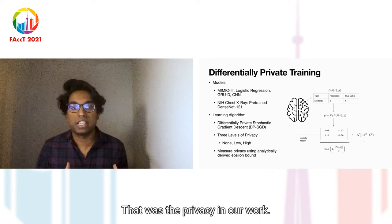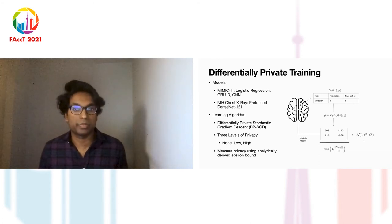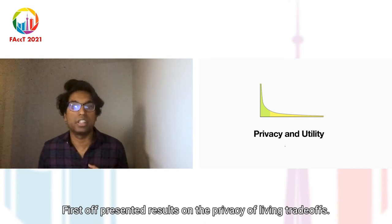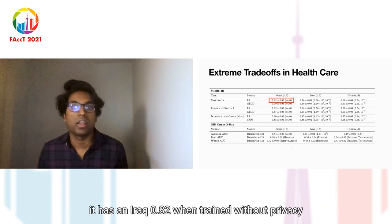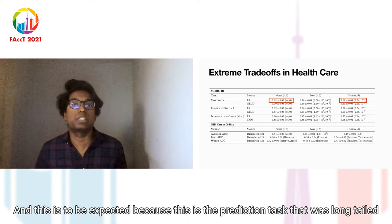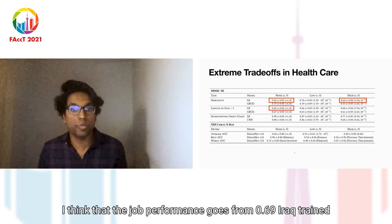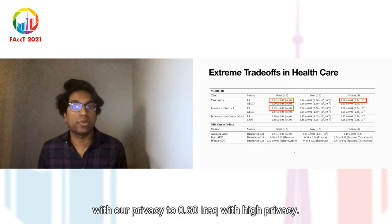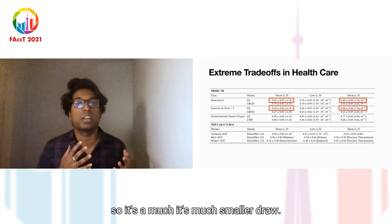We consider three levels of privacy: none, low, and high, all defined by the analytically derived epsilon value. For the logistic regression model on mortality, it achieves an AUROC of 0.82 when trained without privacy, and experiences a 22% drop in performance when trained with a high level of differential privacy — expected because this is the long-tailed prediction task. For length of stay greater than three days, which was not long-tailed, the drop in performance goes from 0.69 AUROC without privacy to 0.60 AUROC with high privacy — only a 9% drop.